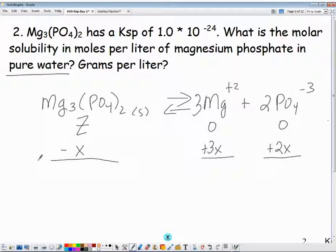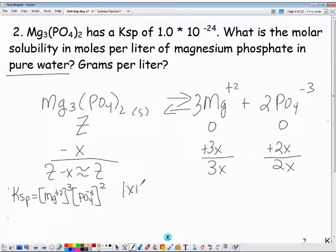At equilibrium we have Z minus X, which we say is approximately Z. We have 3X and we have 2X. And how am I going to solve that for X? I have to get the X alone. So Ksp in this particular case is going to be magnesium ion cubed, yes? Phosphate ion squared. 1 times 10 to the minus 24, my Ksp value, is going to be set equal to 3X cubed times 2X squared. You might say Ms. Batney, we didn't do that one the other day. I know. That's why we're doing it today.